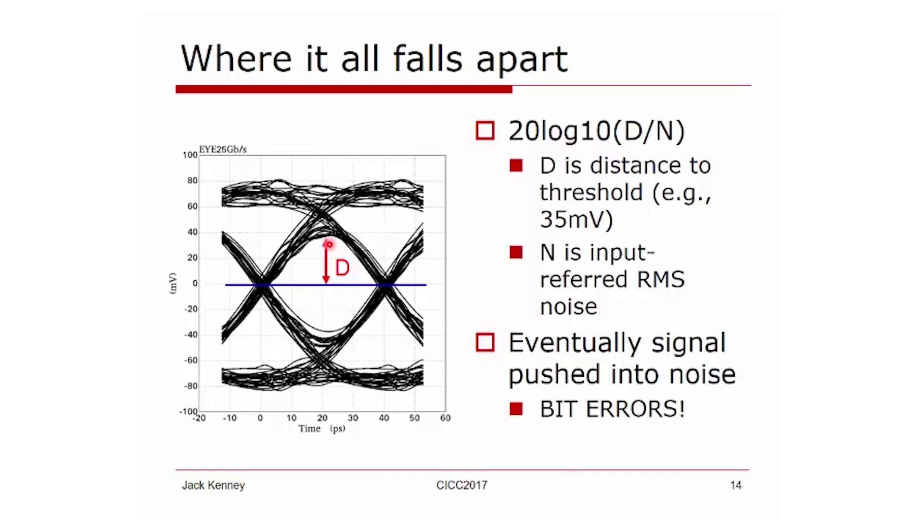Eventually, if you put too much de-emphasis or attenuation in your CTLE, you push your signal into the noise floor of the limiting amp and then bit errors occur.